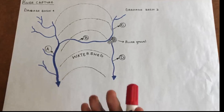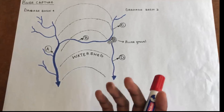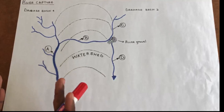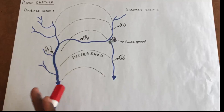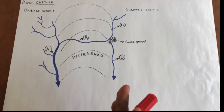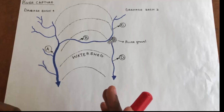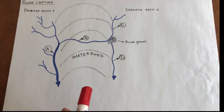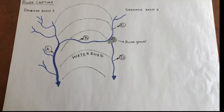So what is river capture? River capture is whereby a river steals water from another river. Those two rivers are from two different drainage basins. So river capture is whereby a river from one drainage basin steals water from a river in a different drainage basin.